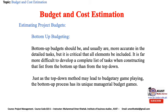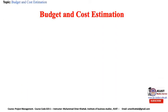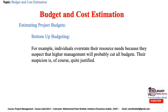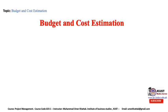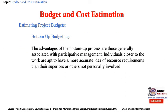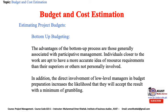Just as the top-down method may lead to budgetary game playing, the bottom-up process has its unique managerial budget games. For example, individuals overstate their resource needs because they suspect that higher management will probably cut all budgets — a suspicion that is quite justified. Managers who are particularly persuasive sometimes win, but those who are consistently honest and have high credibility win more often. The advantages of the bottom-up process are those generally associated with participative management: individuals closer to the work are apt to have more accurate ideas of resource requirements. Direct involvement of low-level managers also increases the likelihood that they will accept the result with a minimum of grumbling.